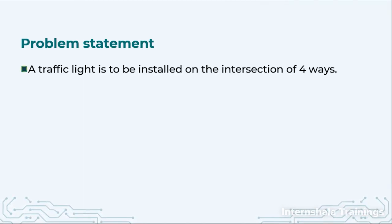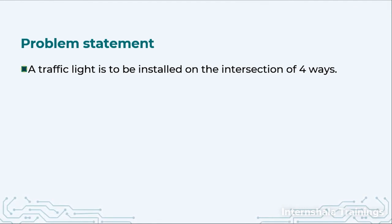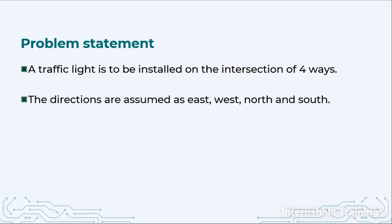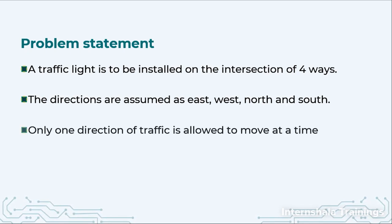First of all we focus on the problem statement. A traffic light controller is installed at an intersection of four different directions — roads which are intersecting at a junction. The directions, for our easiness, are assumed as east, west, north, and south, though it can be any other combination based on the alignment of those four roads on the actual project location. Only one direction of traffic will be allowed to move at a given time.